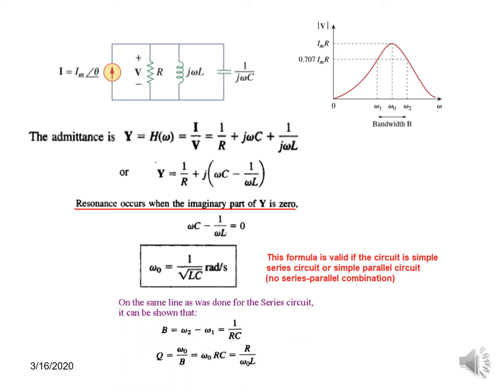And again as before we can find the bandwidth, so this is the bandwidth which is ω₂ minus ω₁, and that is equal to 1/RC. And also the quality factor Q can be found. I'm not going into the details of the derivation, you can see in your book. Q is ω₀/B, and plugging this value of B, it will become ω₀RC.